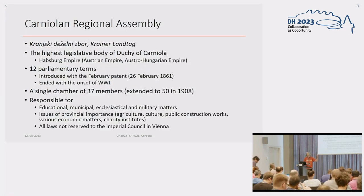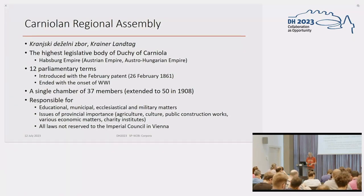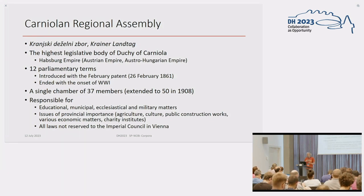So this filling of the gap is the Carniolian Regional Assembly — in Slovenian it's called Krajnski Dželni Zbor, or in German, Krajner Lantak. That was the highest legislative body of the Duchy of Carniola, part of the Habsburg Empire — first the Austrian Empire and then the Austro-Hungarian Empire. They had 12 parliamentary terms, starting with the February Patent in February 1861, and ending at the onset of the First World War.